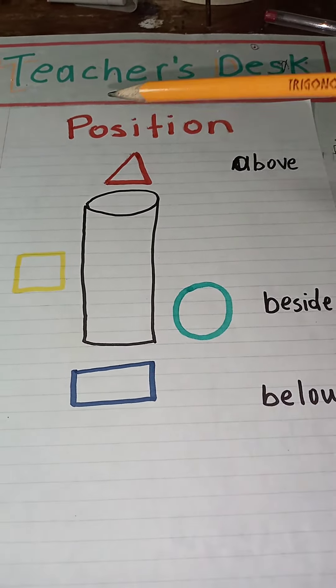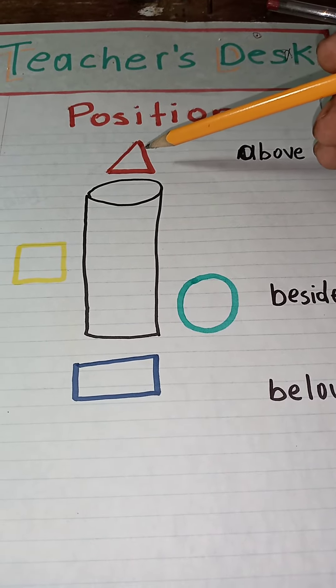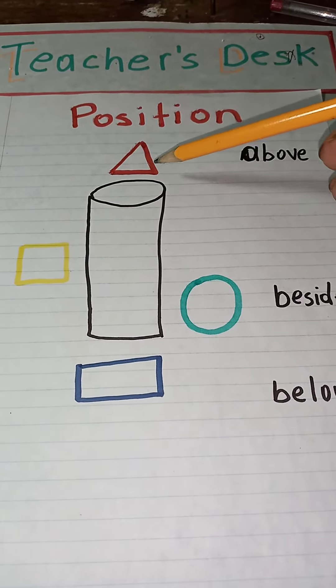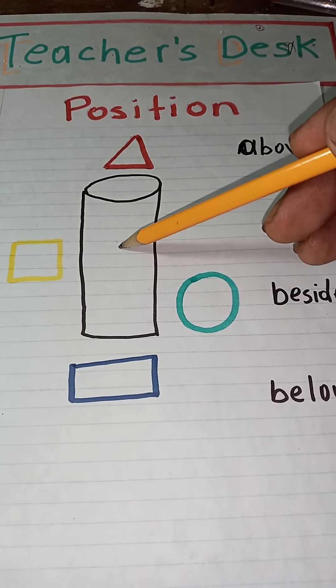Ask the child, where is the triangle? The triangle is above this particular object. This could be a cup or a glass.